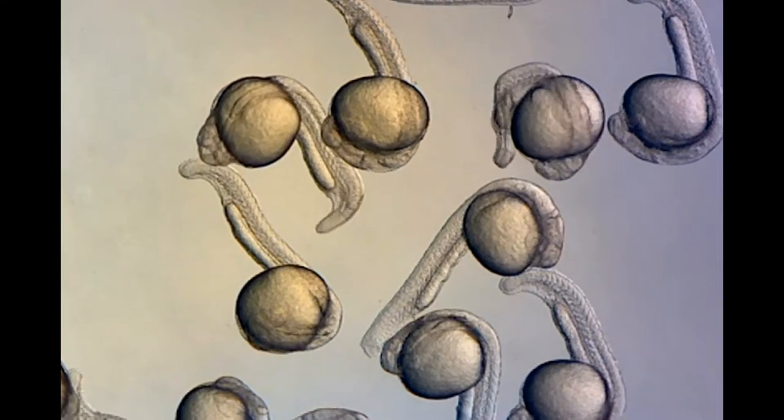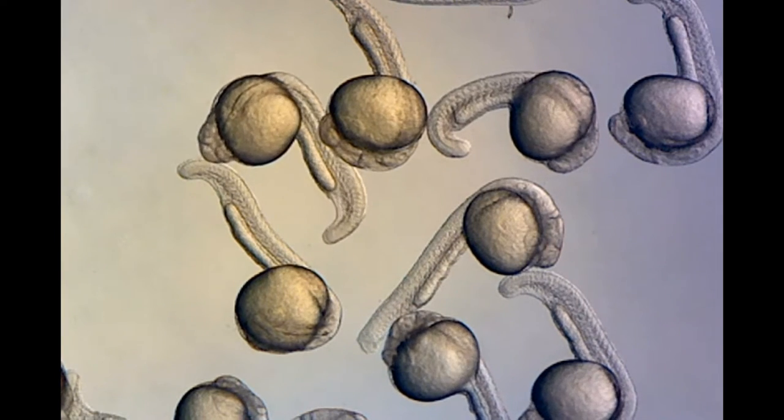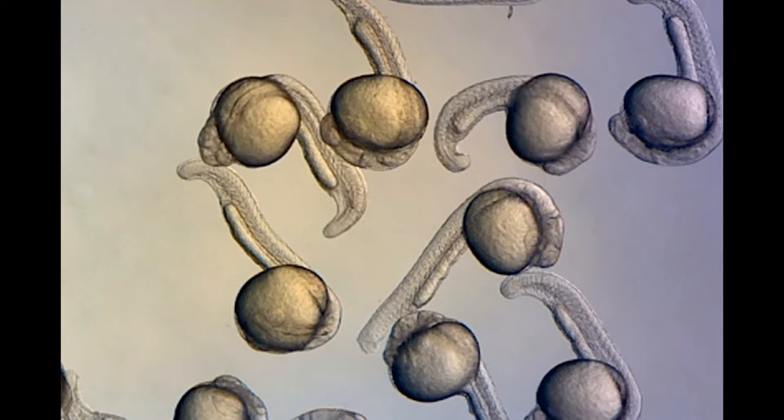Together, these cells build complex animals that can move, behave, and go on to produce more animals. How does all of this complexity arise from a single cell?